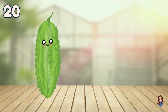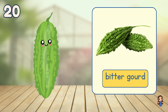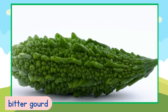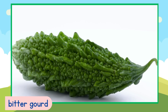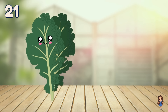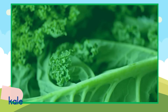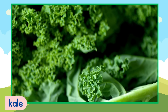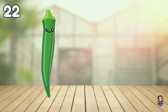What's this? Bitter gourd. Bitter gourd. It's a bitter gourd. What is this? Kale. Kale. This is a kale. What vegetable is this?